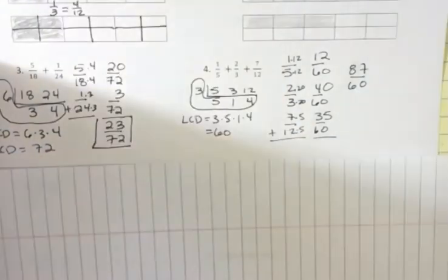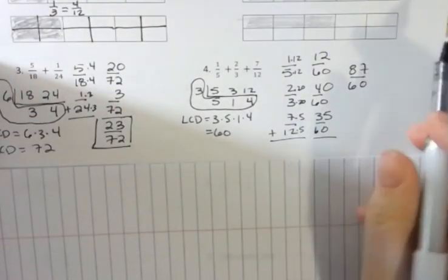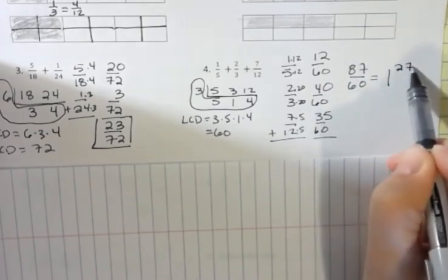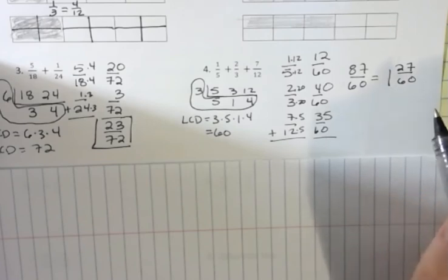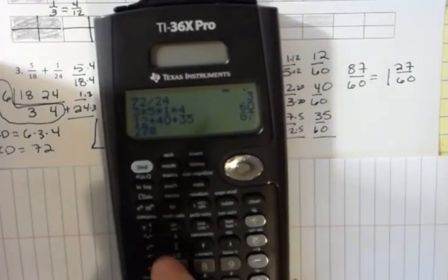And so, I know that I can rewrite this as a mixed number if I'm asked to. 60 goes into 87 one time with 27 left over. Now, you might ask yourself, can I reduce 27 over 60? You can put that into your calculator.